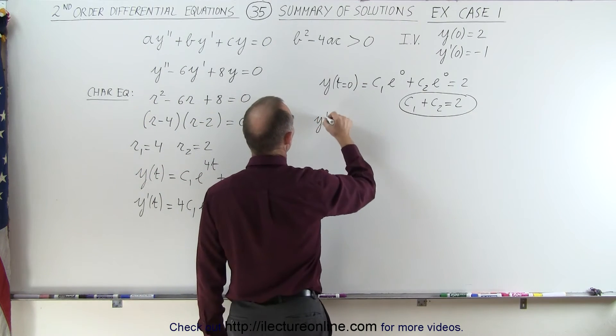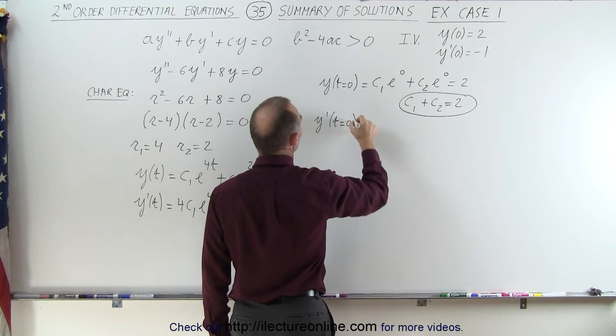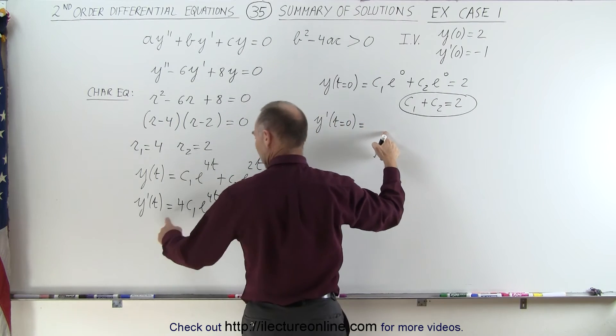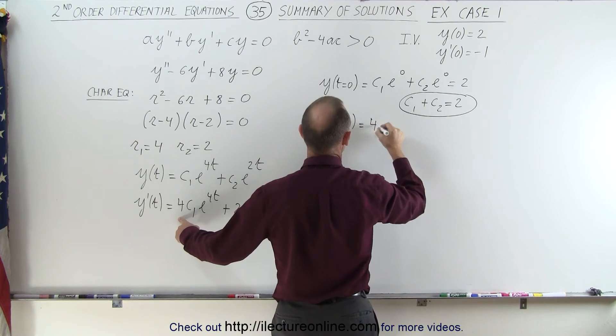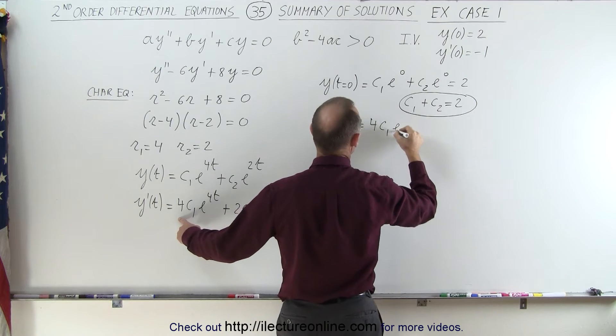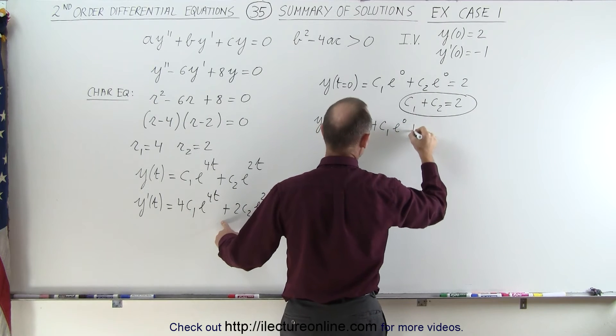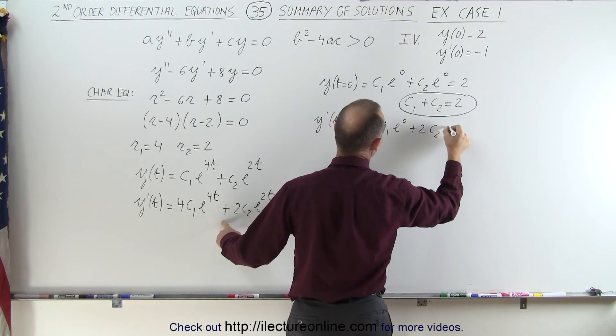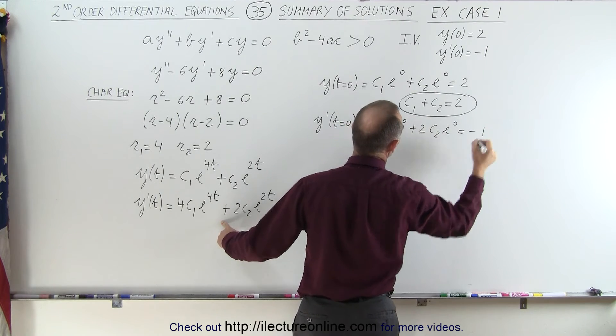We now are going to use the initial condition for the derivative. So y prime when t equals 0 is equal to, over here we have 4c1 times e to the 0 plus 2c2 e to the 0, and that's equal to negative 1.